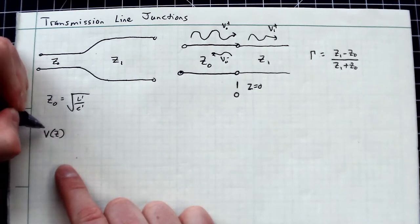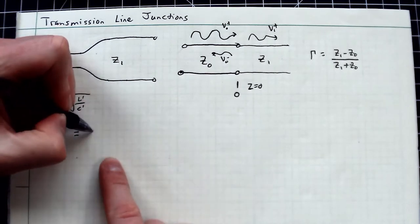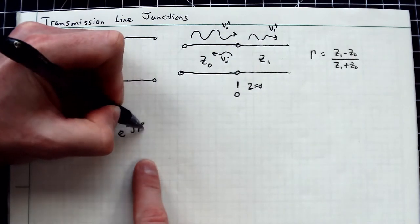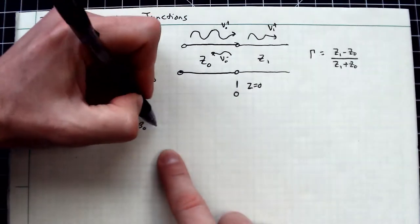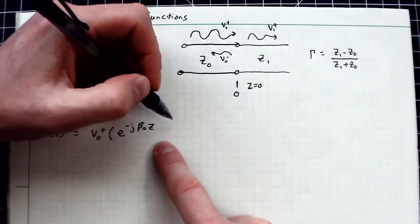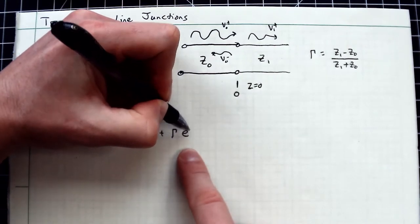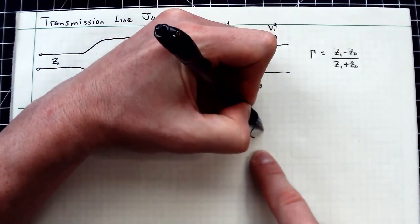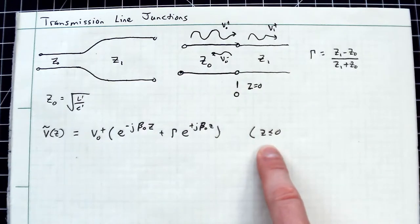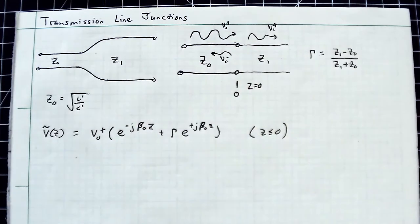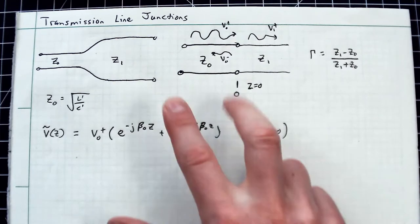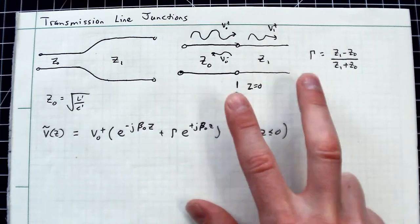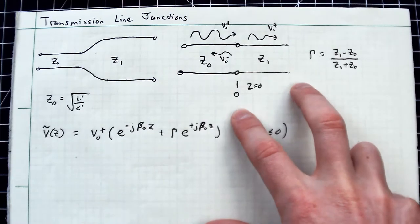V of z tilde equals V₀⁺ times e^(-jβ₀z) plus γ e^(+jβ₀z). I'm putting a sub 0 here to represent the original transmission line. Z is less than or equal to 0. So that's all the waves to the left - an incident wave plus the reflected wave in this region. Then there's some transmitted wave over here. If that feels ad hoc, remember this is how you do partial differential equations. When solving a wave equation, you assume some form for your solution and impose a boundary condition. If everything satisfies your boundaries and the Helmholtz equation, then that's your answer.